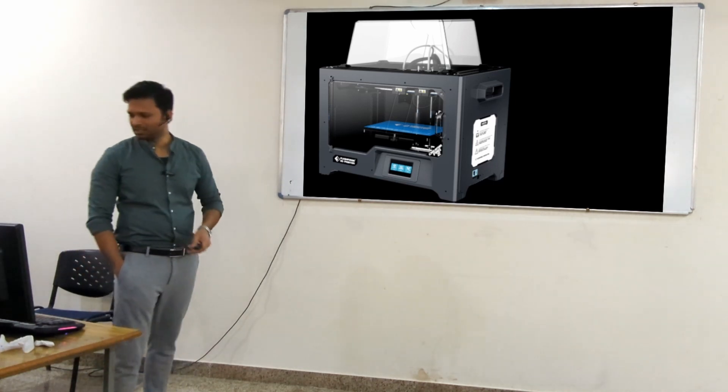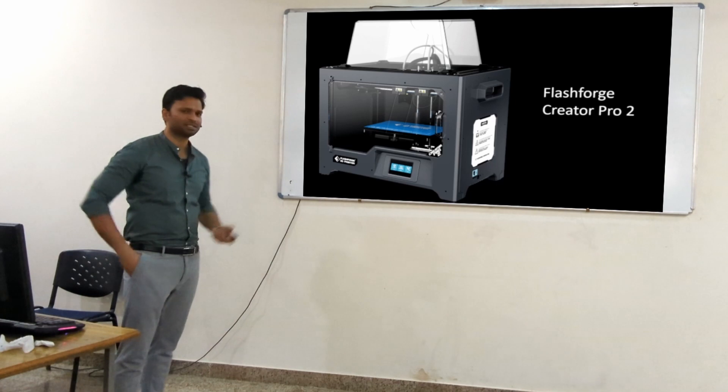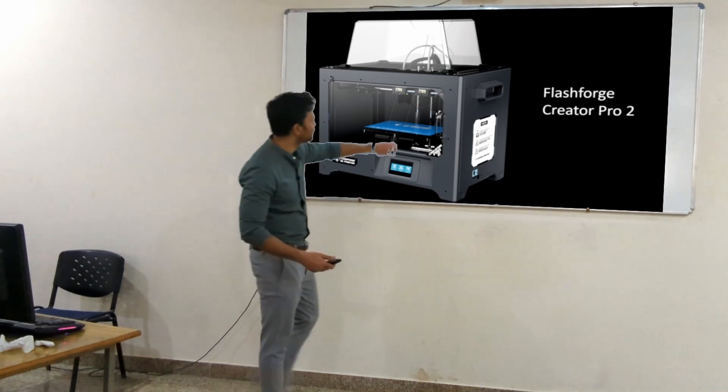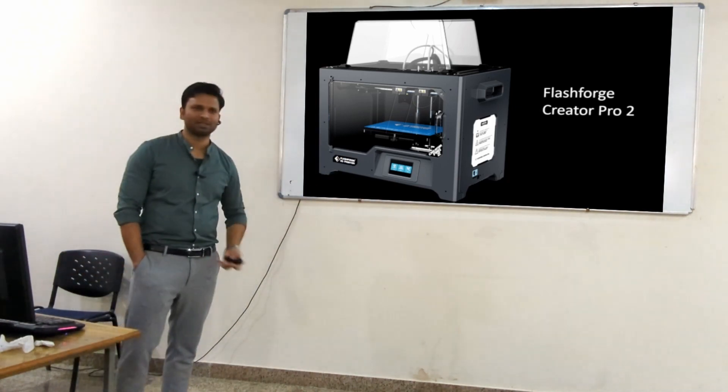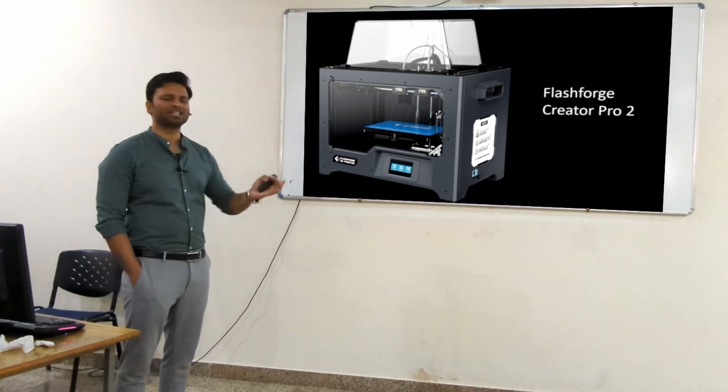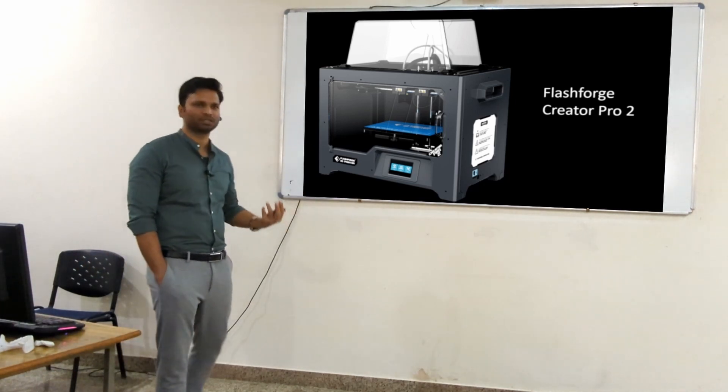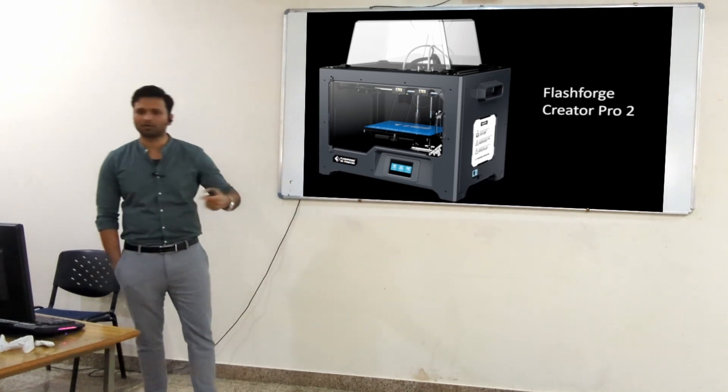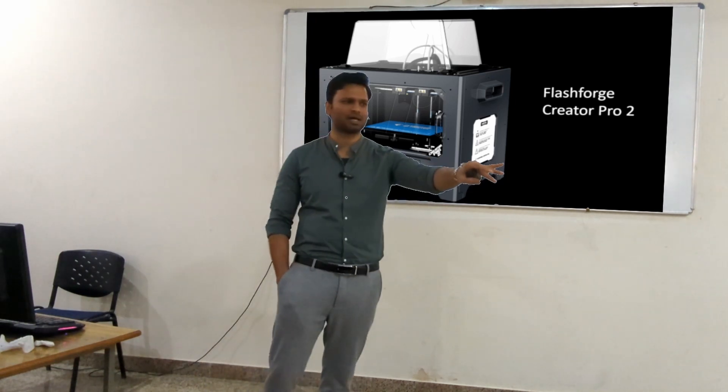The printer we have at our department is FlashForge Creator Pro 2. The benefit of this printer is it can print two models together. You can see there are two nozzles - one and two. That's why we bought this one, because it's faster. In FDM printers, the printing speed is usually very slow because the plastic melts and deposits. It takes a lot of time.